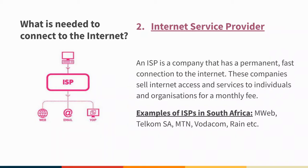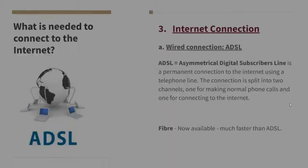What else do we need? An Internet Service Provider. An ISP is a company that has a permanent, fast connection to the Internet. These companies sell Internet access and services to individuals and organizations for a monthly fee. Examples include M-Web, Telkom, MTN, Vodacom, and RSA Web.